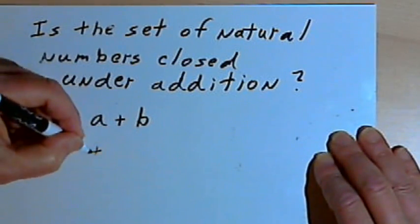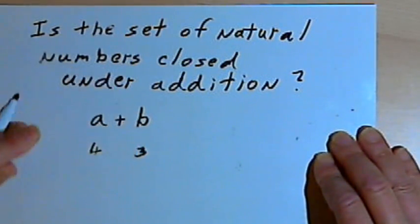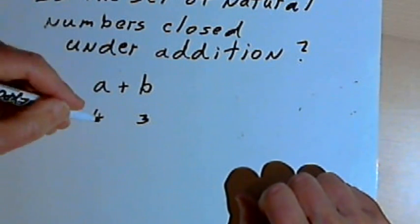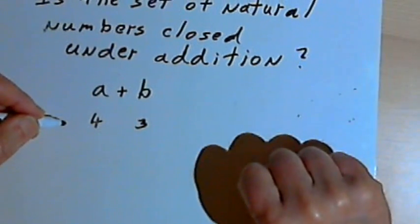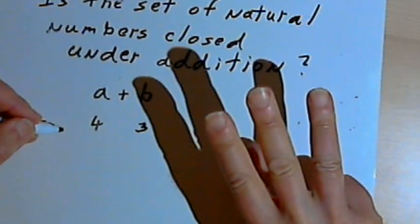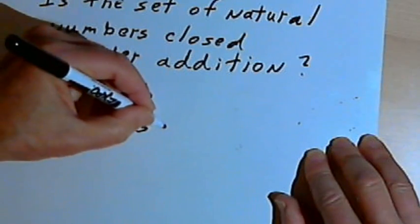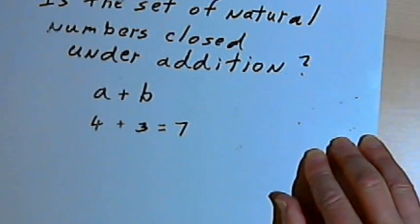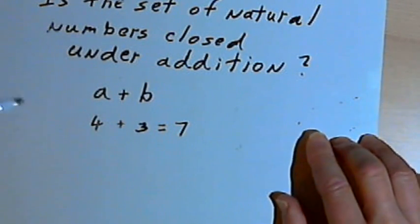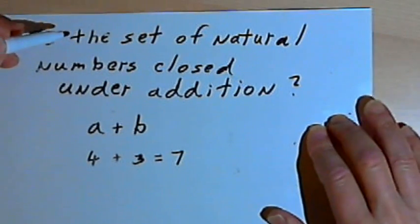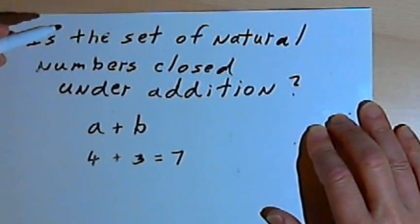if A was 4 and B was 3, then I could just count on my fingers. I could start at 4 and say 5, 6, 7. So I've counted up three units and I've come to another natural number. So it seems pretty reasonable to say the set of natural numbers is closed under addition.